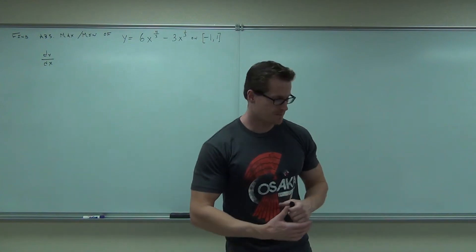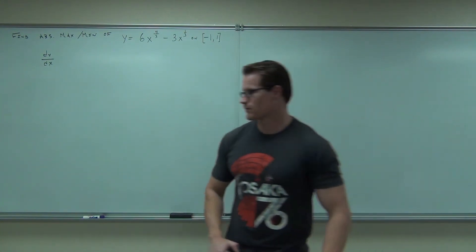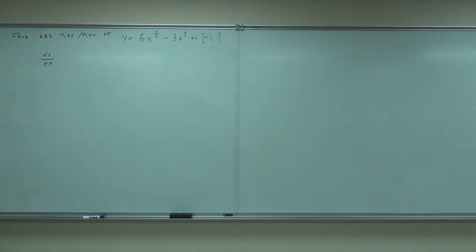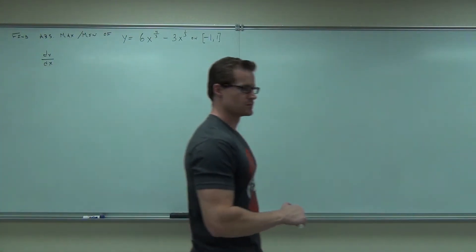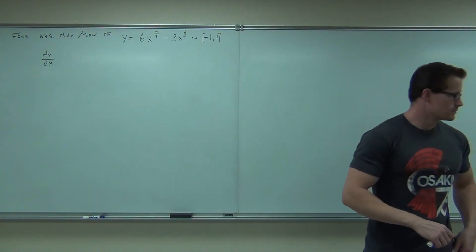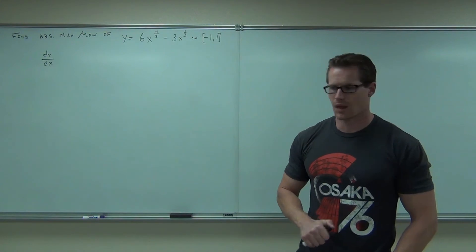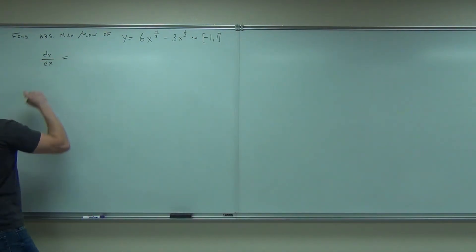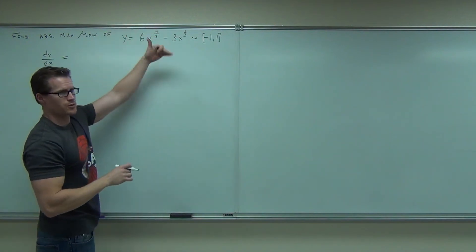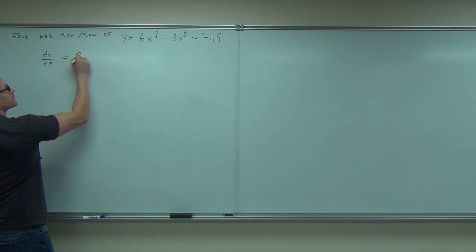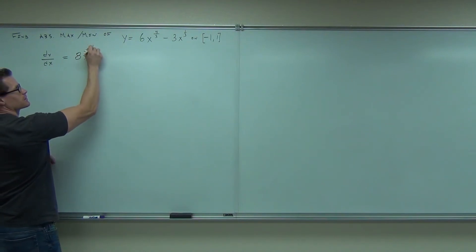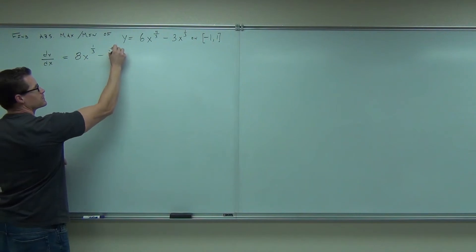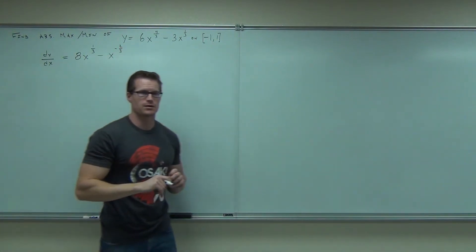Find me the first derivative, please. The first derivative: you take down the 4/3, you're going to get 24 over 3, or you simplify as you go. Either way you get 8. X to the one-third minus... How many people were able to find that?